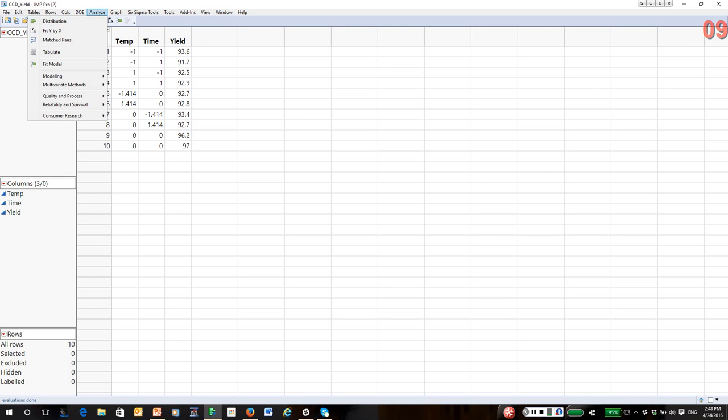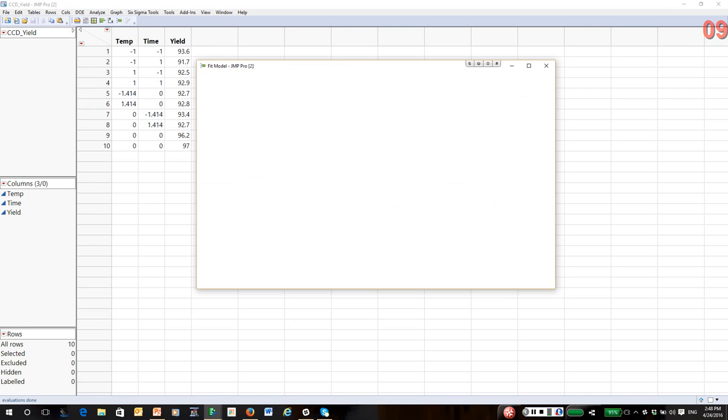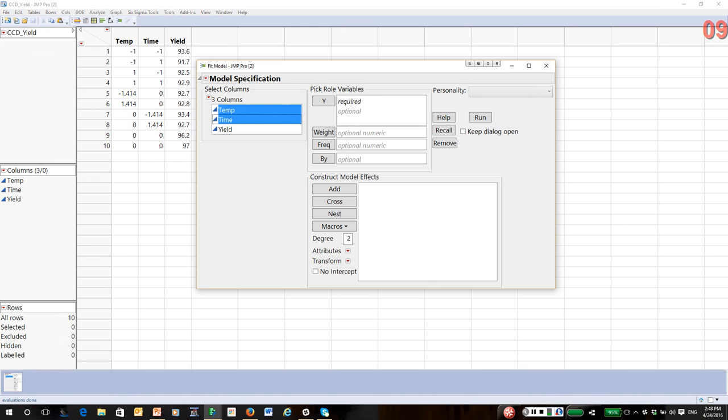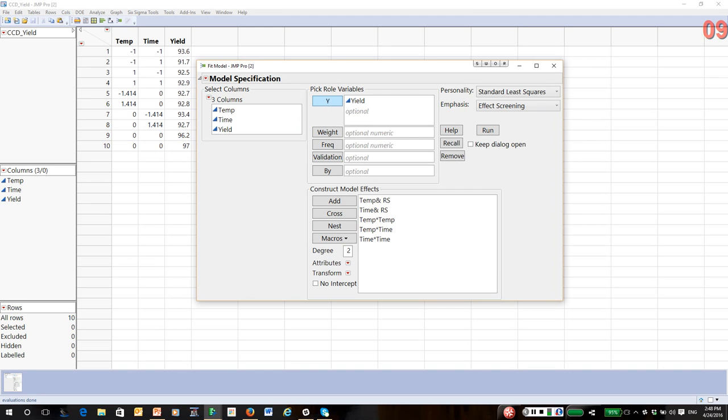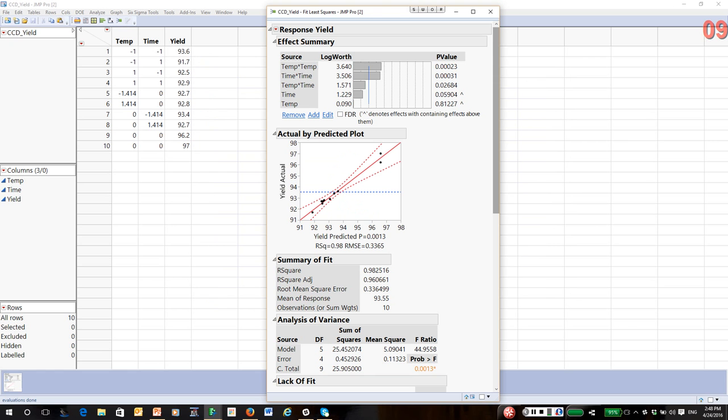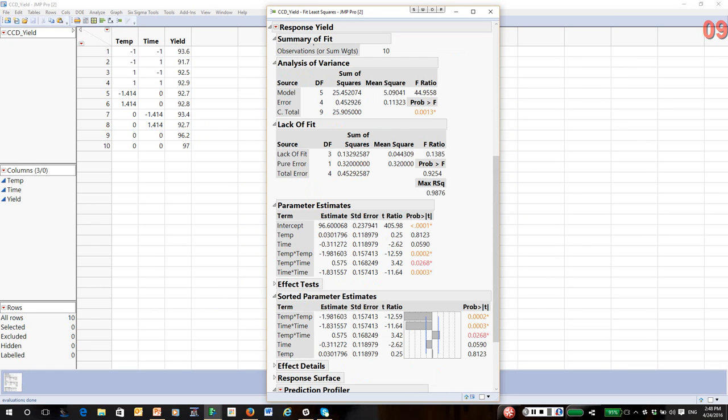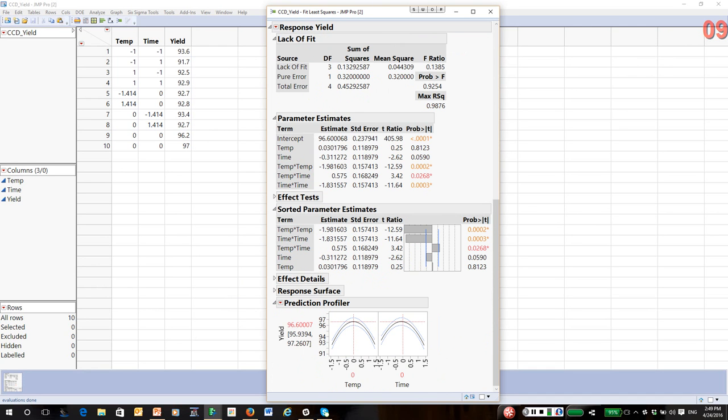I would go to Fit Model, highlight time and temp in the select columns window. Under Macros, select Response Surface, and select yield as the response. Notice that actually all the quadratic terms in the interaction appear significant.